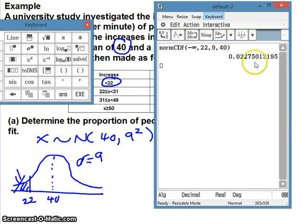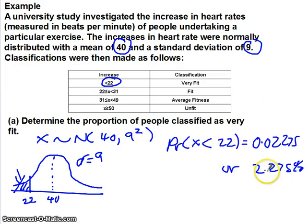There we go. It's not quite the 2.5% that we would get, but those are approximate values. That's 68, 95, 99.7. So we're getting 0.02275 or 2.275%.